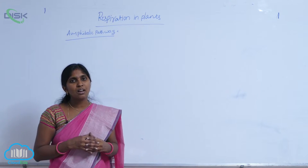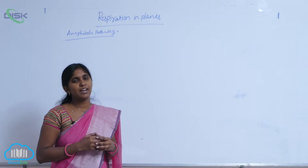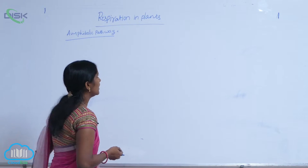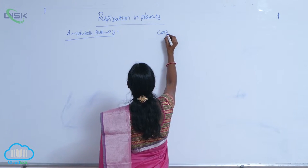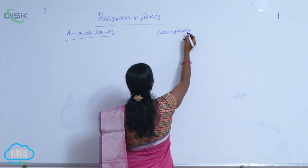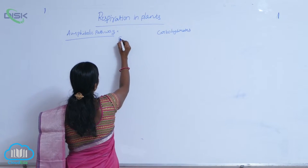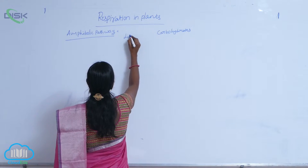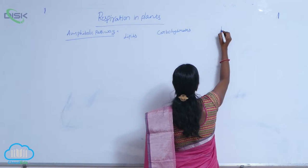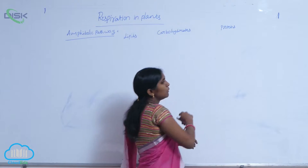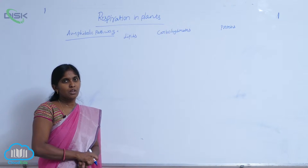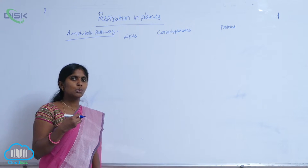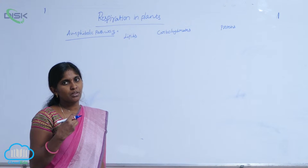Many respiratory substrates are present in both plants and animals. The respiratory substances are mainly three types: carbohydrates, lipids, and proteins. These are macromolecules.